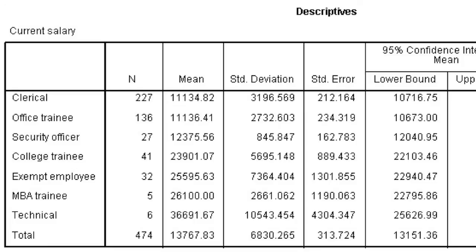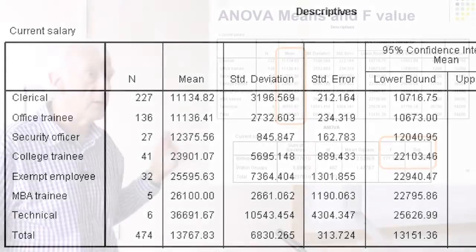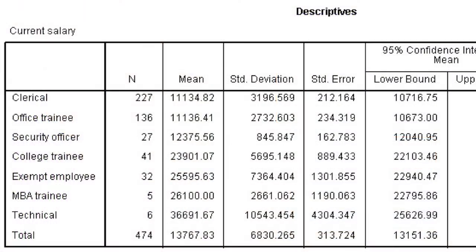The question is, if this was a sample drawn at random from a number of banks, or from the, you know, large bank, and we sample 474 individuals, is this evidence that, as a whole, there are differences between the different salary groups, the different occupational groups. And that's what the ANOVA is telling us.